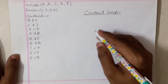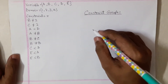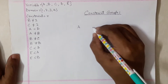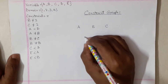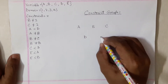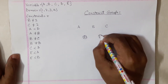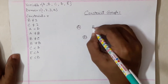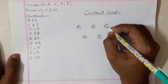What you're simply going to do is write down the variables and make nodes from them. So you have a, b, c, d, and e here — these are all going to be nodes, so you're going to make vertices out of them.